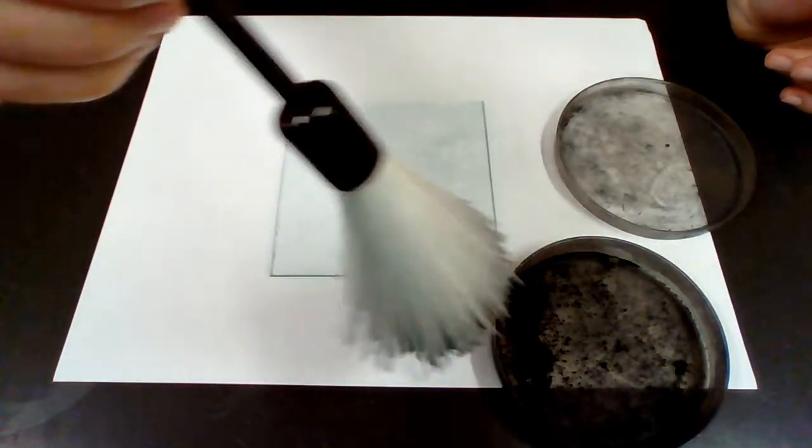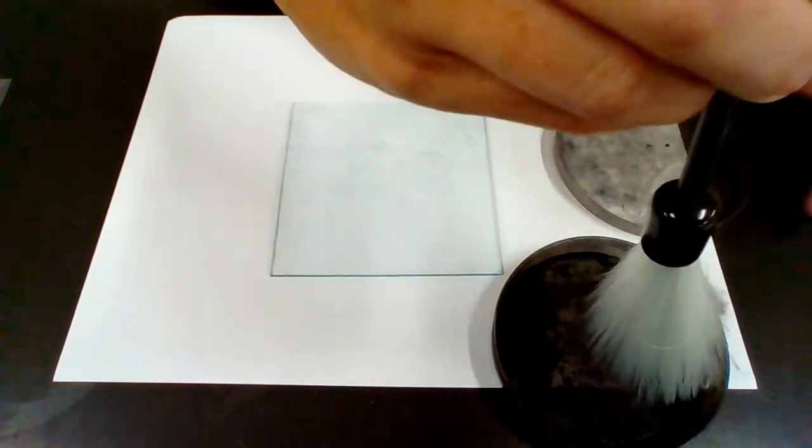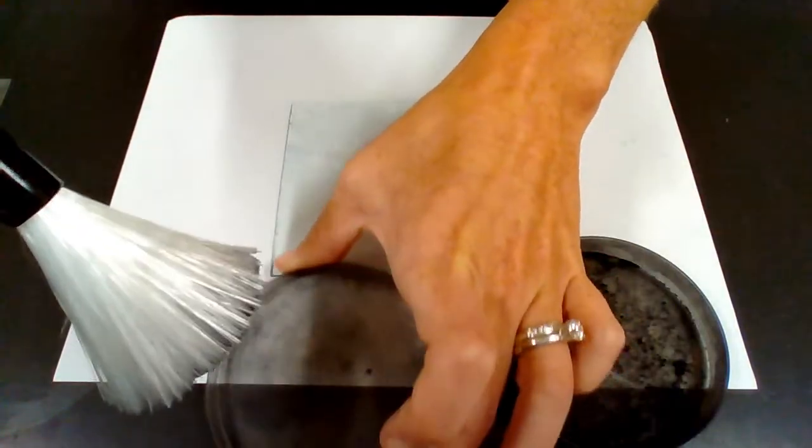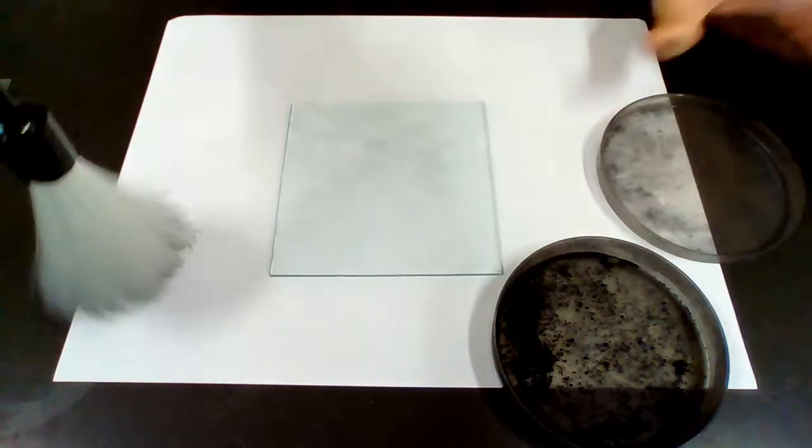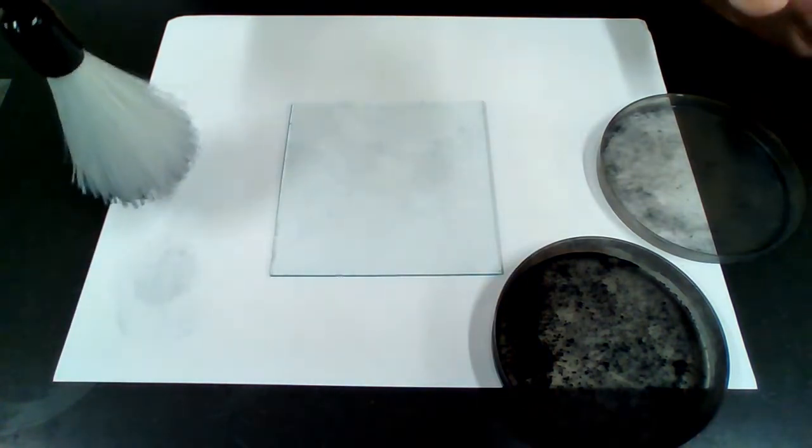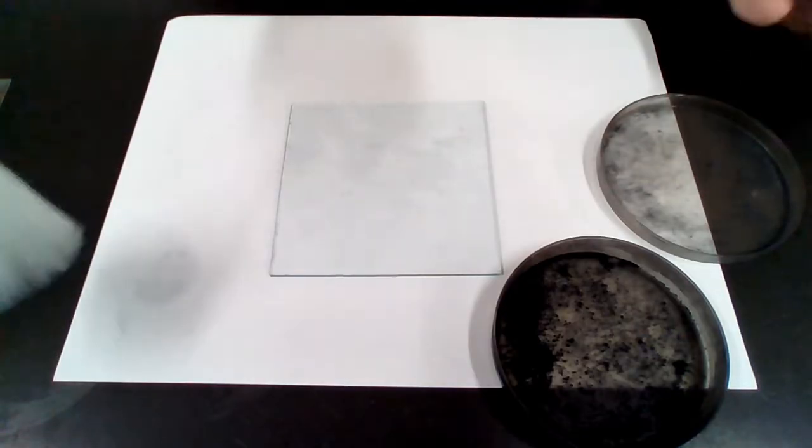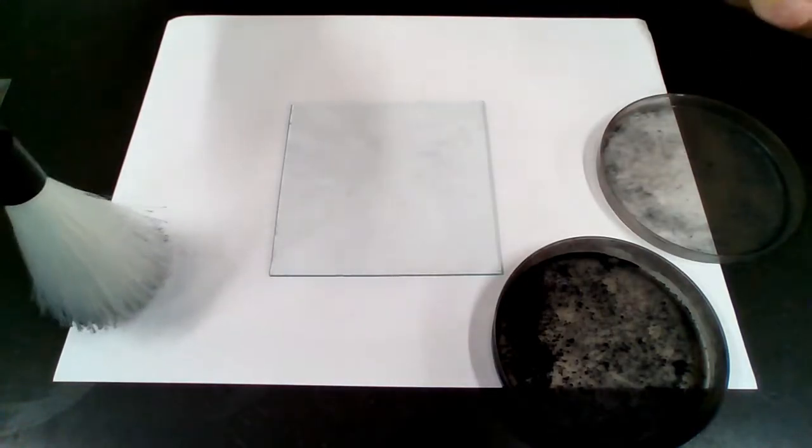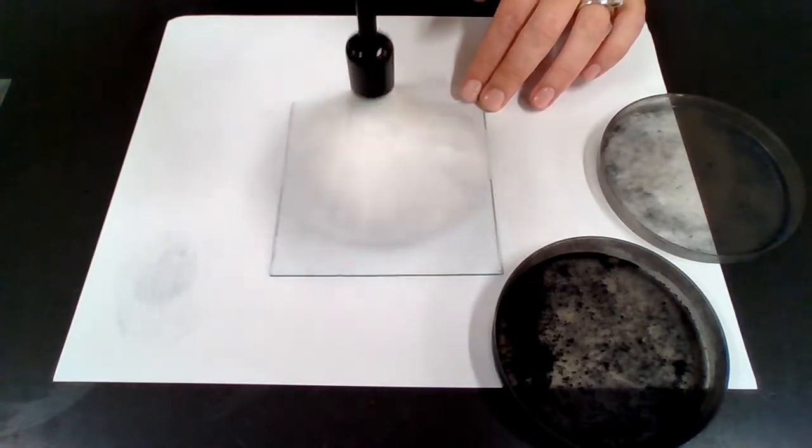Now what I typically do is tap ever so slightly into the powder, and then I use my lid to tap off any excess. On a scratch sheet of paper, I'll make sure that I'm really only transferring a very small amount of powder. If you see a lot of saturation of the black powder, it's a little bit too much. I'm going to just barely touch my surface.